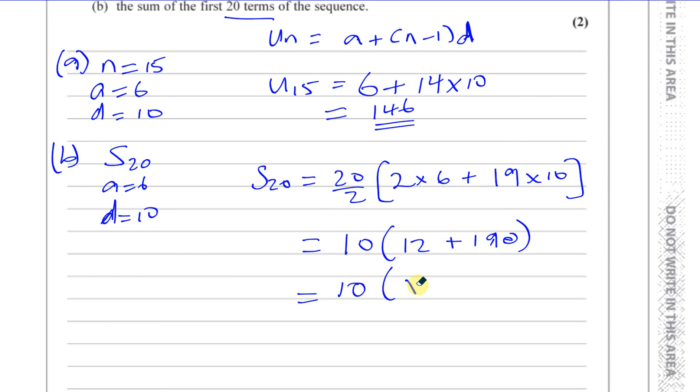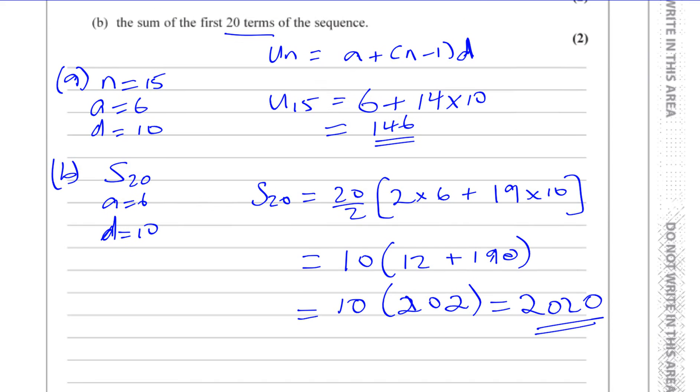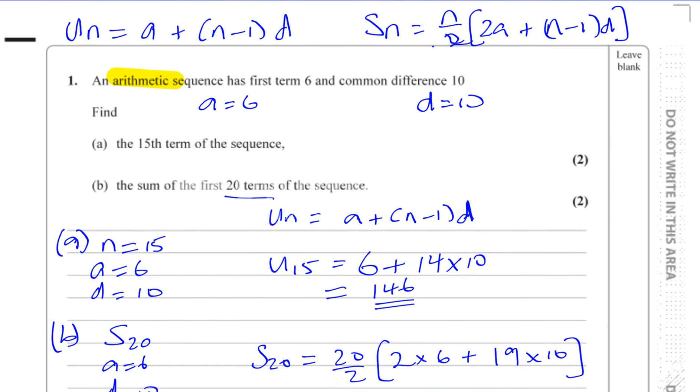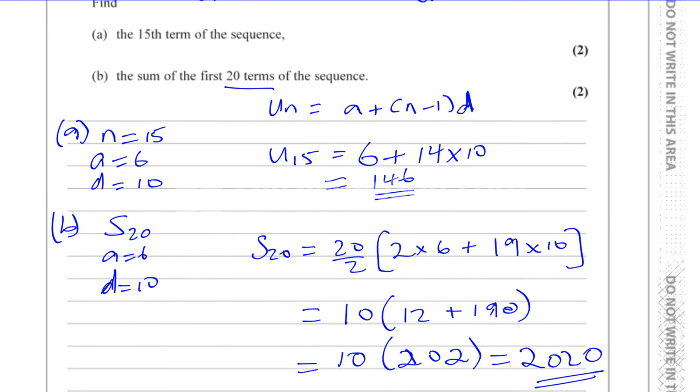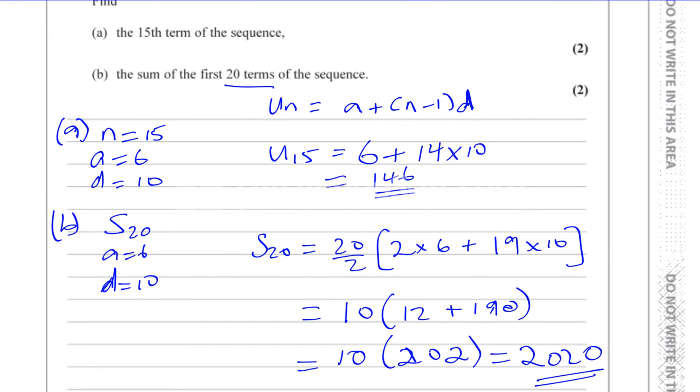So 202, and 10 times 202 is 2020. And there we have the answer for question number 1, part a and b. Pretty simple question answered, so I'll get on with the next question in the next video.